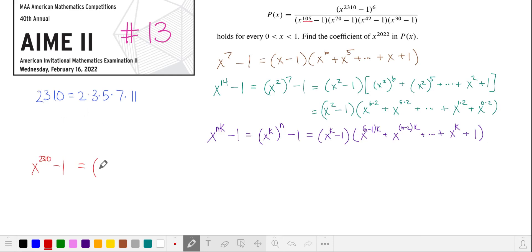So let's write this as x to the power of 105 raised to the 22nd power. Now we can pull out the first factor, x to the power of 105 minus 1. And our second factor is x raised to the power of 105 times these other numbers, all the way down to 1. This first factor will cancel with this in our denominator of p of x.